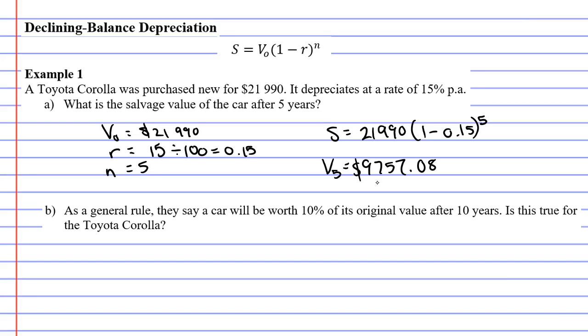Let's move on to question B. It says, as a general rule, they say a car will be worth 10% of its original value after 10 years. Is this true for the Toyota Corolla? So if I was to find 10% of the original value of the car, of $21,990, all I would do would be just to take the zero off at the end. So it would only be worth $2,199 after 10 years. Is this true in this situation?